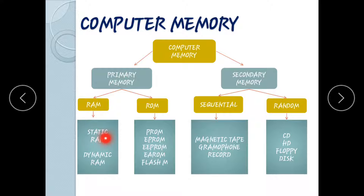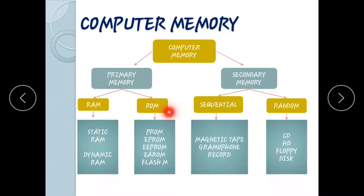RAM is divided into Static RAM and Dynamic RAM. ROM — Read-Only Memory — is a read-only memory type. Read-only memory stores data that can only be read.